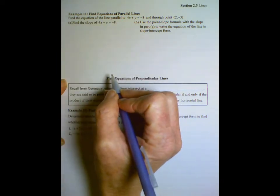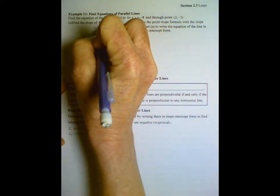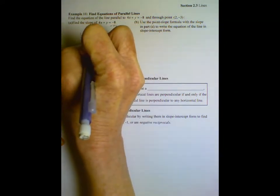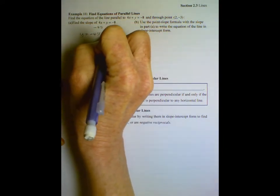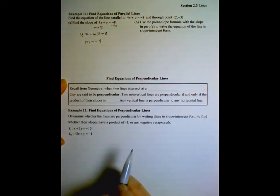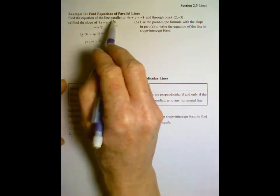In other words, put it in slope-intercept form. If we subtract 4x from both sides, we get y equals negative 4x minus 8. So we know the slope must be negative 4 for the equation we need to write for the line we need to write because they're parallel.